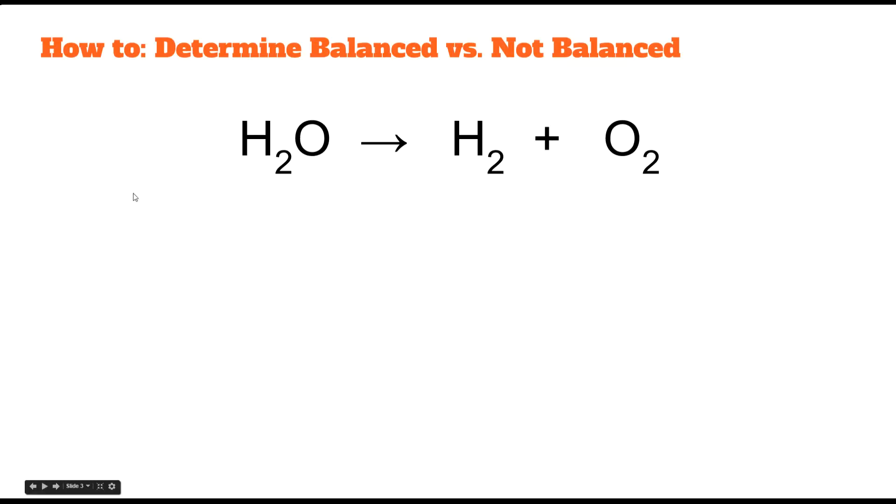So we're going to do an example together. So you want to write down this chemical equation. To determine if balanced versus not balanced, the first thing that we do is you're going to draw a straight line down, kind of by the yield sign. We're going to write down all of the atoms that we have on the reactant side. So it looks like we have hydrogen and oxygen.